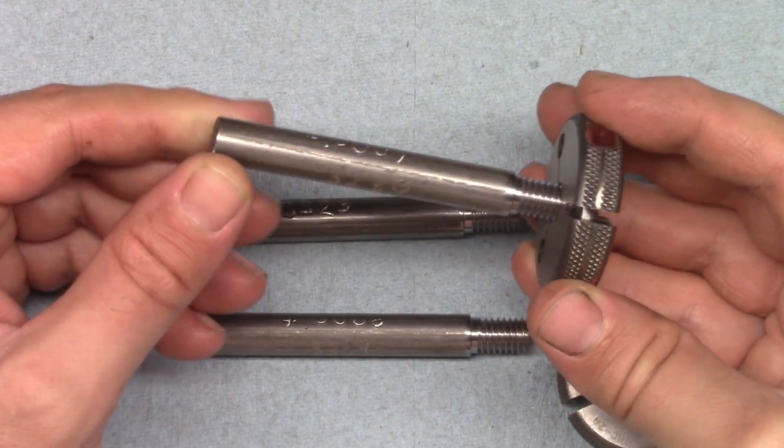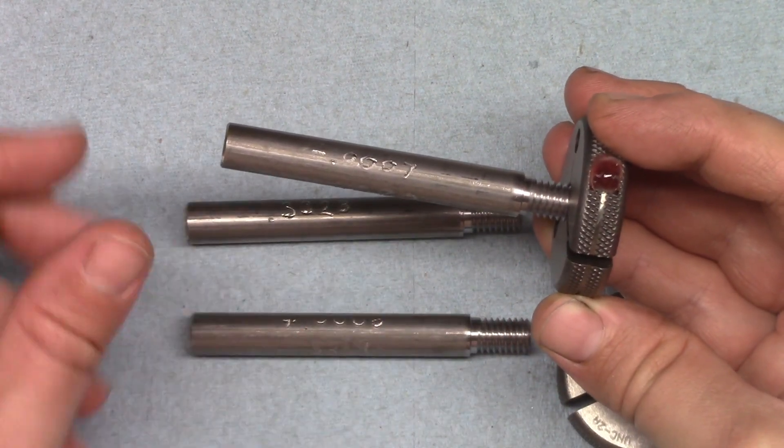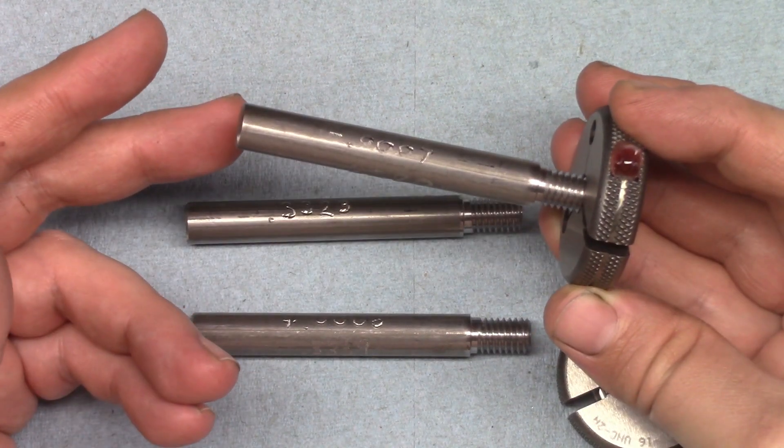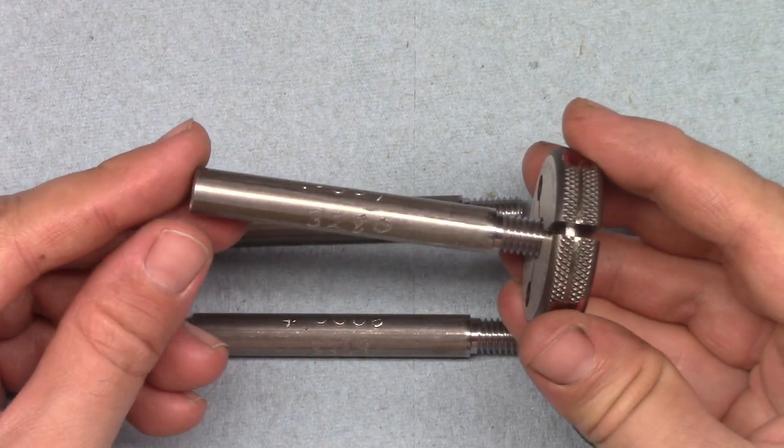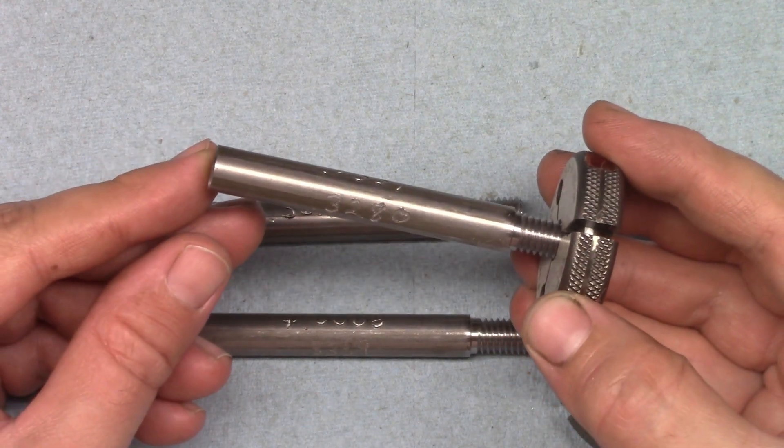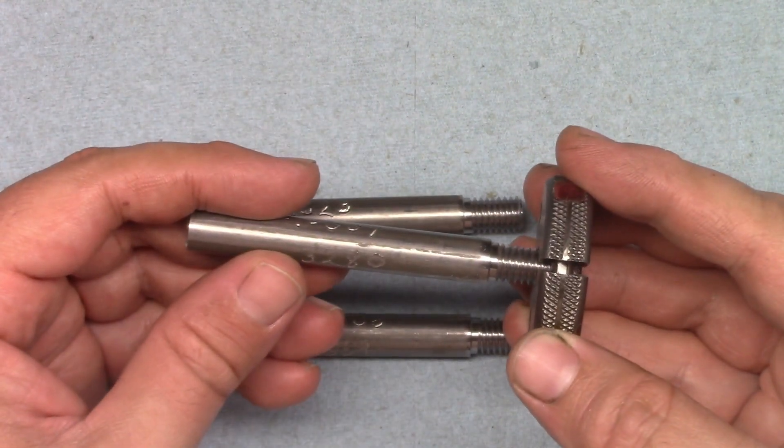This part is only undersized by 7 ten-thousandths of an inch or 18 microns, so it's quite tight and only threads on a few turns. But the ring gauge does go on more than it should. That illustrates that a part that's right on the cusp of the tolerance might be mistakenly passed.